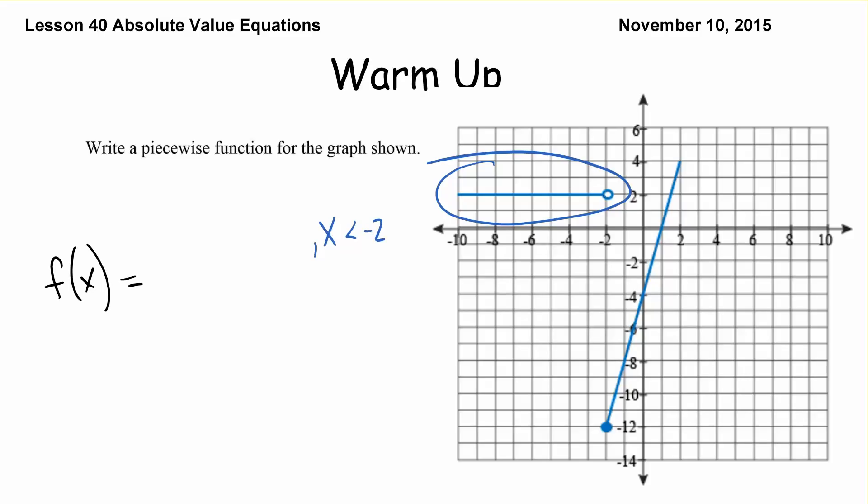Now that's a horizontal line so our equation is y equals 2 or f of x equals 2. Our next graph we'll call our red graph. We can see our constraint here is x values that are greater than or equal to 2 because I've got a closed circle, sorry negative 2. Negative 2.